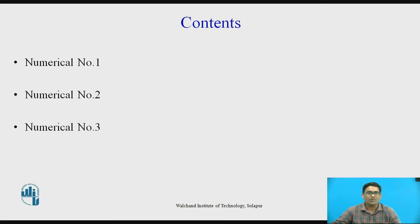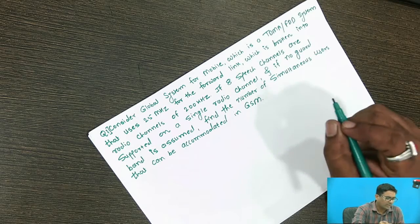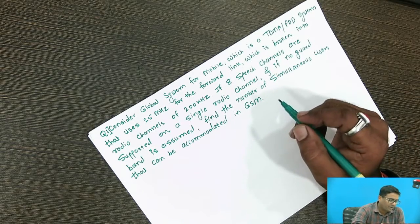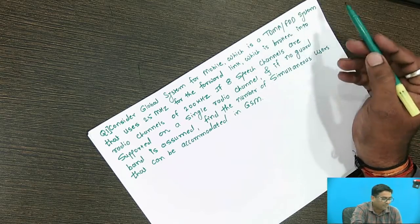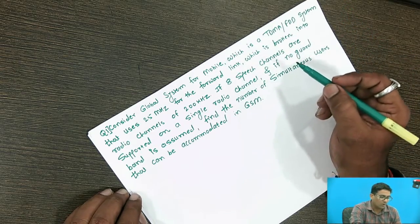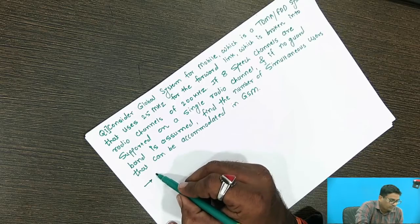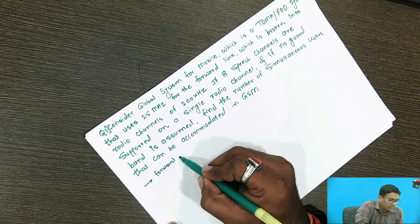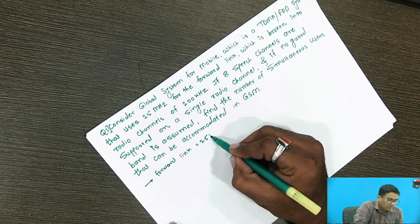In this topic, we want to see three numericals on TDMA: numerical number 1, numerical number 2, and numerical number 3. Now let us start with numerical number 1. Consider a global system for mobile, which is a TDMA FDD system that uses 25 MHz for the forward link.